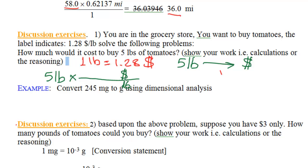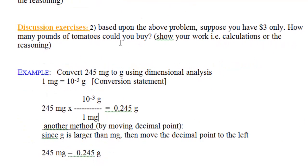Step 4: from the conversion statement, 1 pound equals $1.28, so 1.28 goes in the numerator and 1 beside pound. We multiply 5 pounds by $1.28 over 1 pound — pounds cancel — giving 5 times 1.28 dollars. Notice the answer is more than 5 because we are going from a bigger unit to a smaller unit; decreasing the unit increases the number.